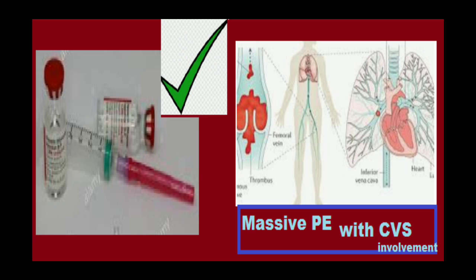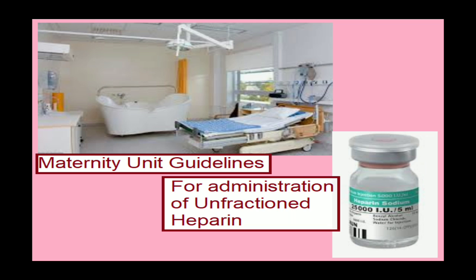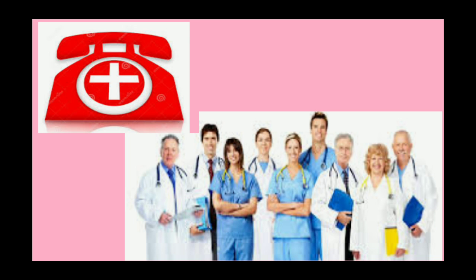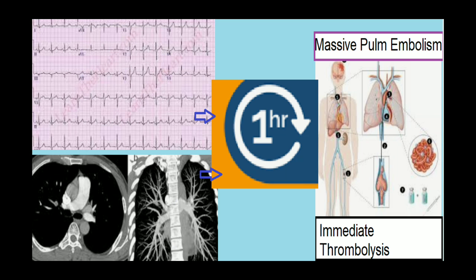In massive pulmonary embolism with cardiovascular compromise, unfractionated heparin is preferred. Maternity units should have a guideline for its administration. The on-call medical team should be contacted immediately, and an urgent portable ECG or CTPA within one hour of presentation should be arranged.